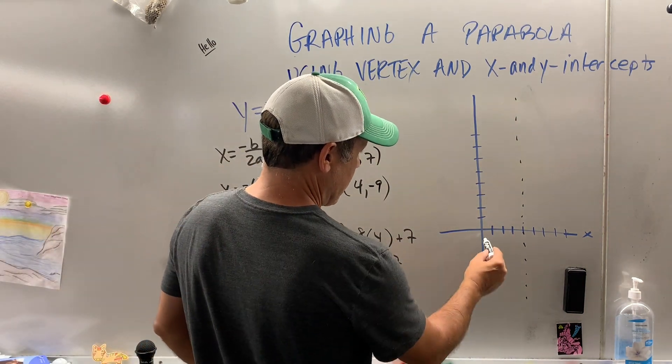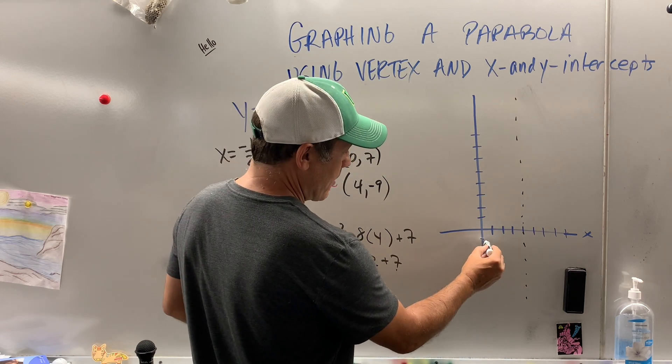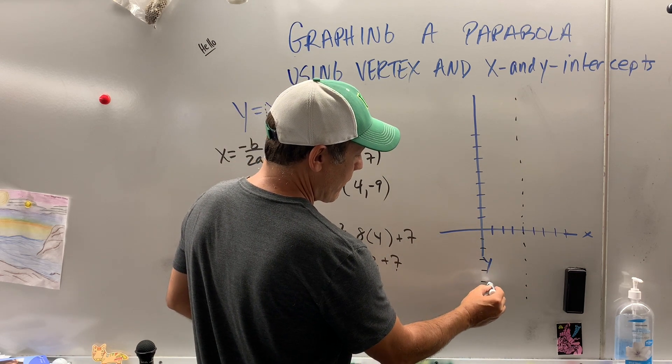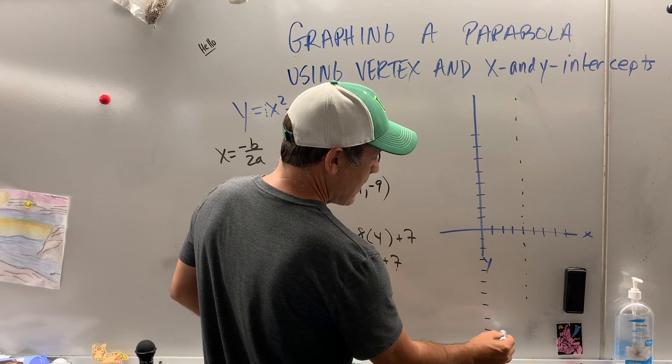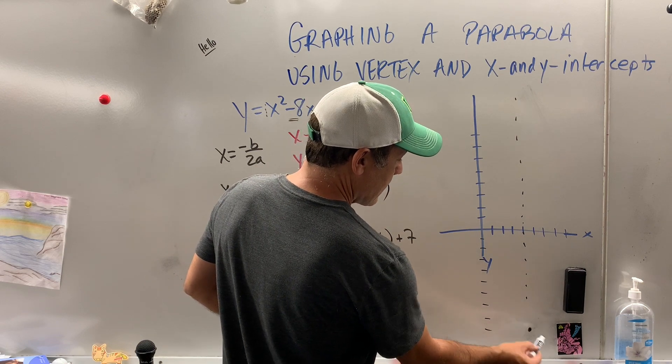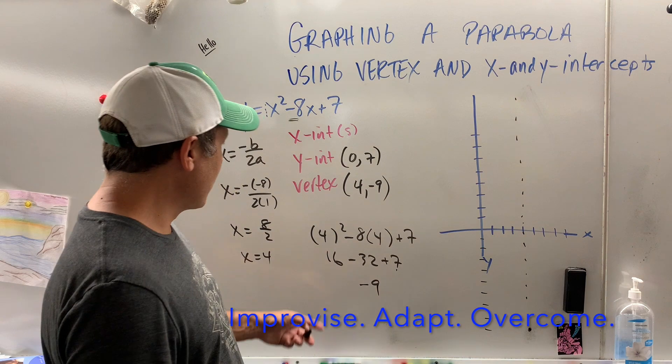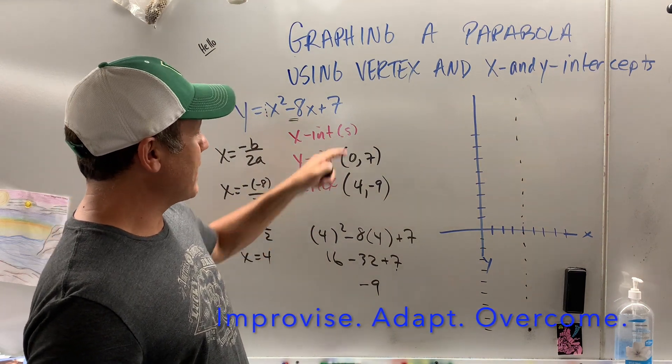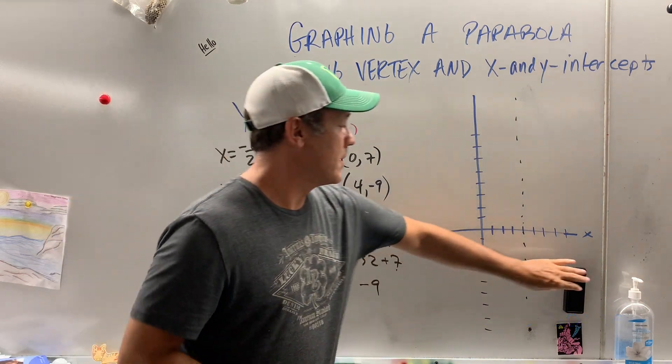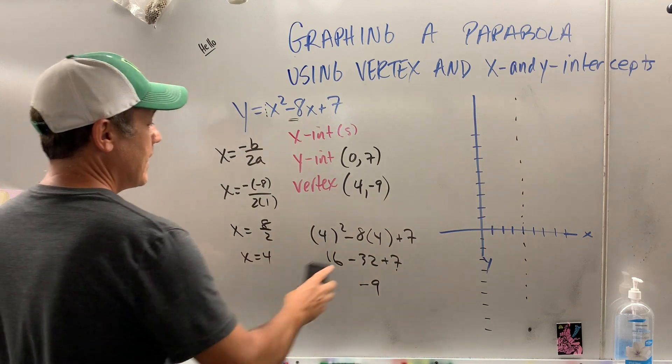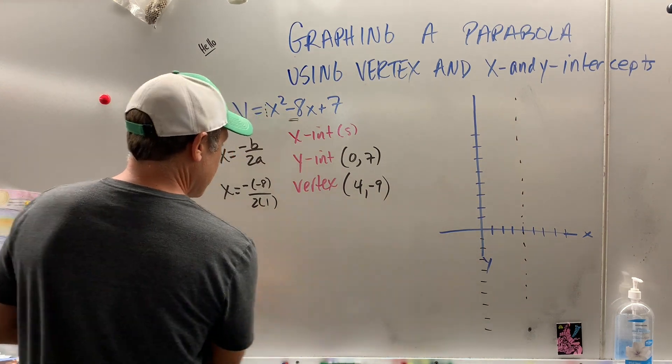Oh boy, I messed this up. I got to come down here. 1, 2, 3, 4, 5, 6, 7, 8, 9. Sometimes you got to adapt and overcome. But now we got to find the x-intercept. So I'm going to need some room. So I'm going to come over here and erase this to get it out of my way.